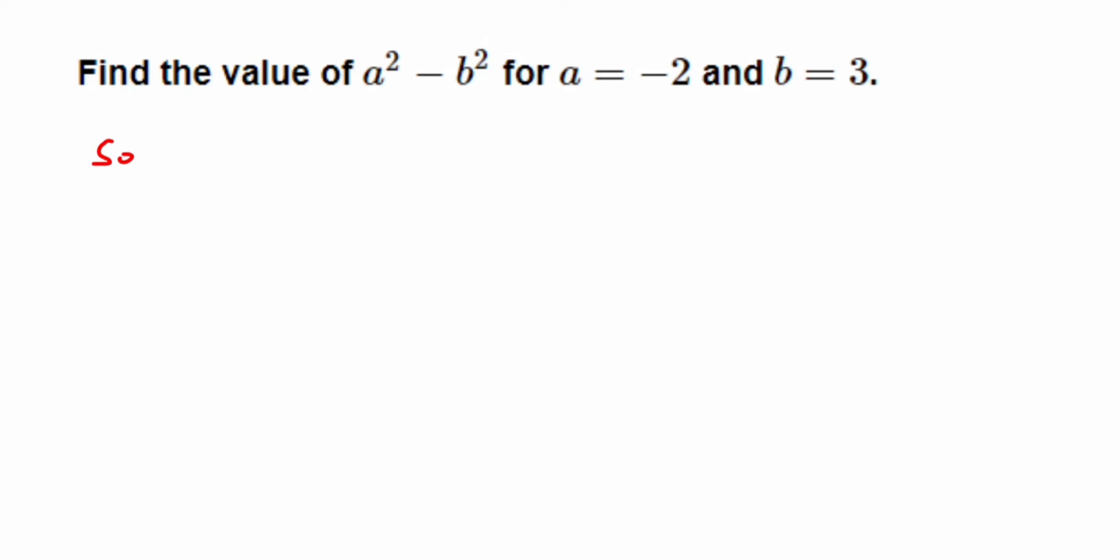We have to just substitute the value of a and b in the given expression and that's it. The expression given here is a squared minus b squared, and we have given a value is minus 2 and b value is 3.